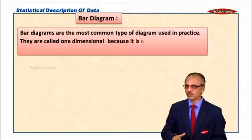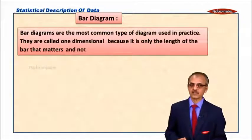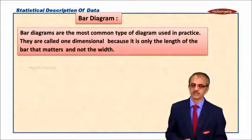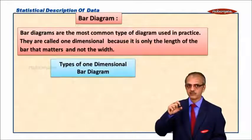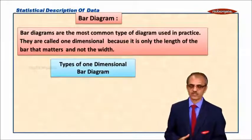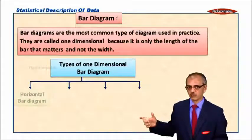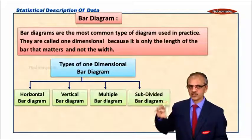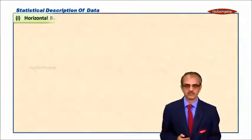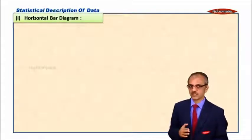They are called one-dimensional because only the length of the bar matters, not the width of the bar. What are the types of the one-dimensional bar diagram? We have horizontal, vertical, multiple, and subdivided bar diagram. Now we start with the first one, horizontal bar diagram.